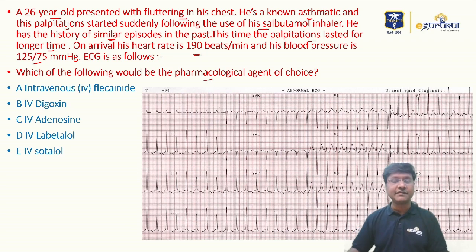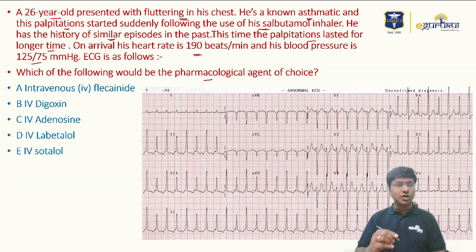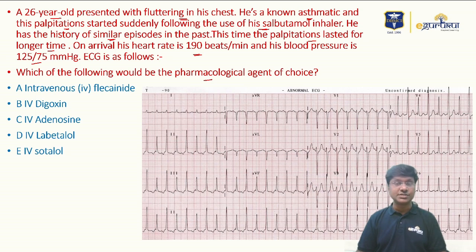The ECG is as follows. Which of the following would be the pharmacological agent of choice? The options are: intravenous flecainide, intravenous digoxin, intravenous adenosine, intravenous labetalol, and intravenous sotalol.